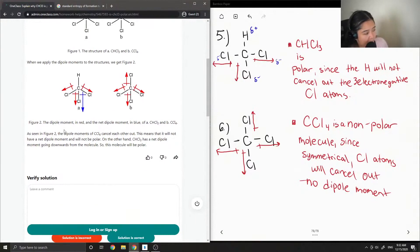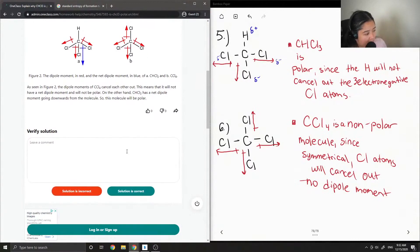The dipole moment in red and the net dipole moment in blue of CHCl3 and CCl4. CCl4's dipoles cancel each other, this means that it will not have a net dipole moment and will not be polar. On the other hand, CHCl3 has a net dipole moment going downward from the molecule, so this molecule will be polar.